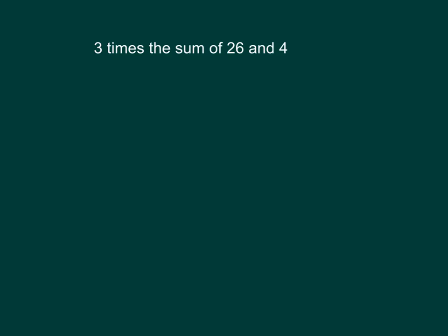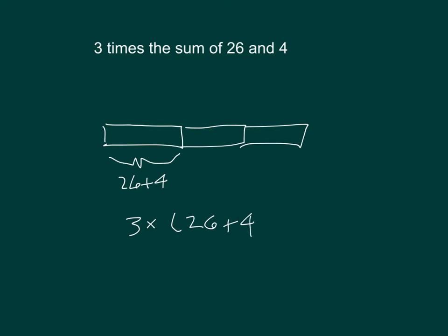What would we have then for 3 times the sum of 26 and 4? What would we write? Well, that's now 26 plus 4. And 3 times the sum is 3 times the sum of 26 and 4. So there's the expression that we would have.